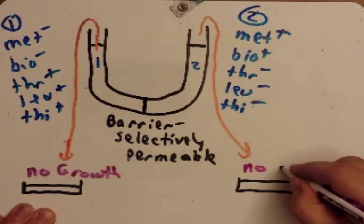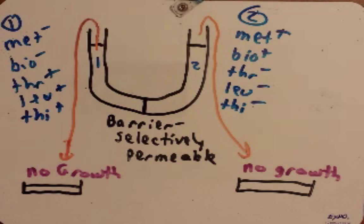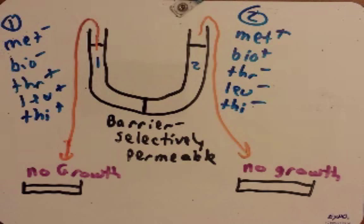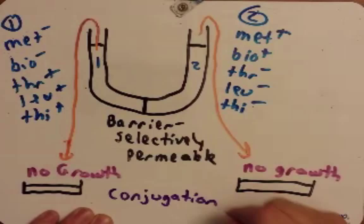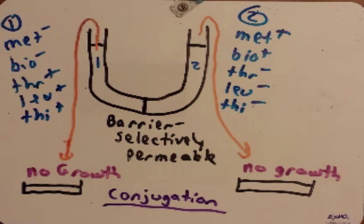This suggested that the way to get the fully prototrophic organism — Met-plus, Biotin-plus, Threonine-plus, Leucine-plus, and Thiamine-plus — was that these two strains not only had to be in the same proximity to each other, but they had to physically connect with each other. The barrier prevented them from doing that. If you remove this barrier, then you would get growth and you would form these prototrophs. And this is called conjugation.